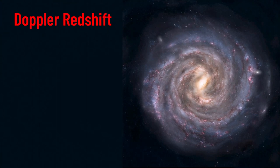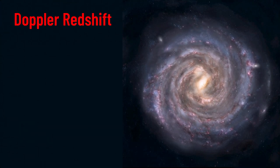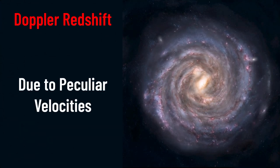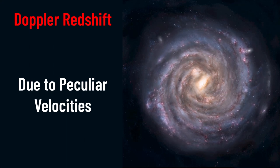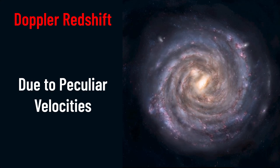Similar to the Doppler effect of sound mentioned earlier, Doppler redshift is caused by what's known as peculiar velocities. These are the internal motions of objects which aren't caused by the expanding universe. Take, for example, a spiral galaxy,